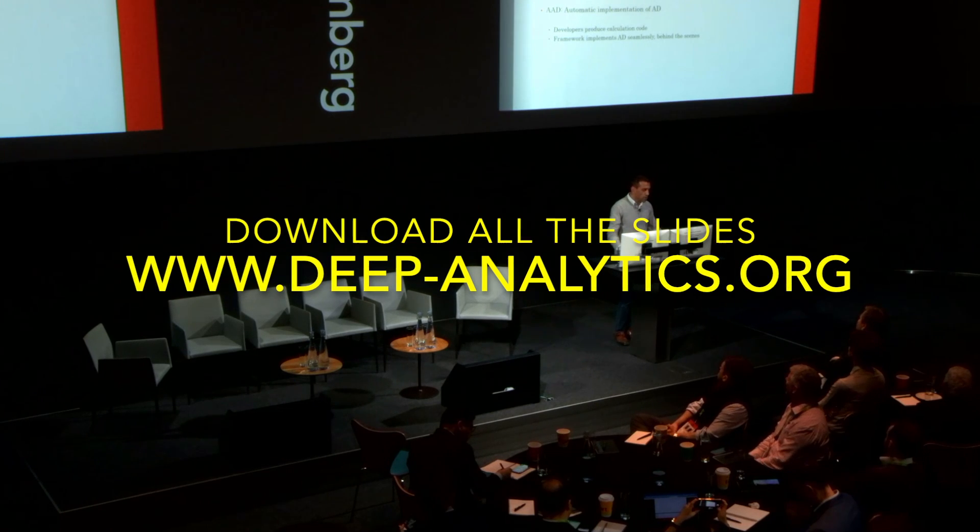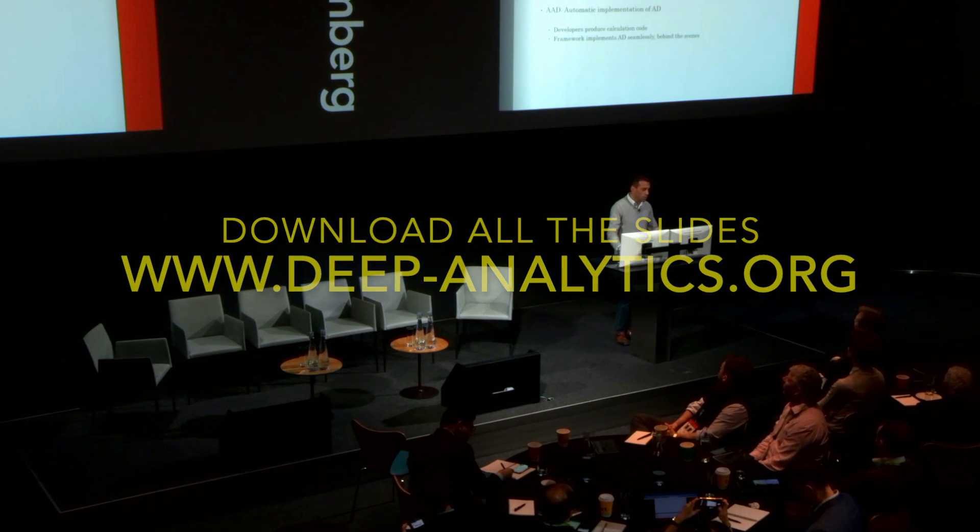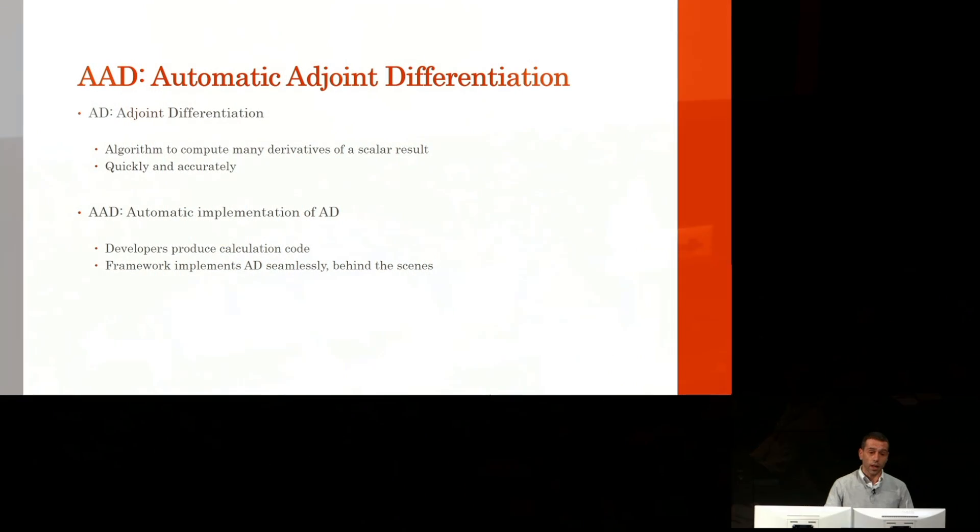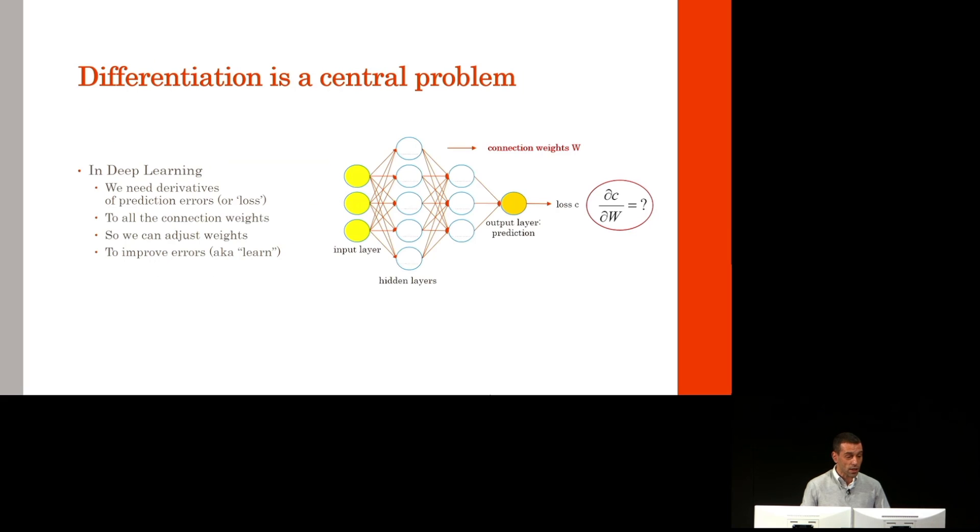Agent differentiation, or AD, is an algorithm to compute many derivatives of a given result very quickly and very accurately. AAD is an automatic implementation of AD whereby developers only produce calculation code and the framework differentiates it automatically behind the scenes. You may think it's a lot of hype for a differentiation algorithm, but differentiation is a key problem in many fields, including deep learning and finance.